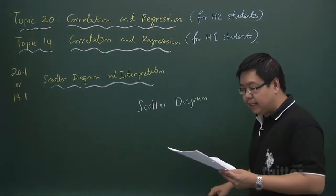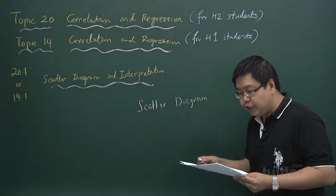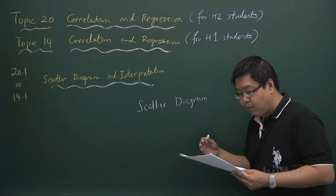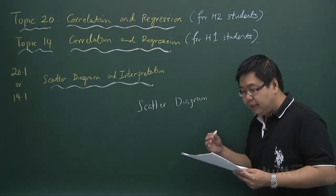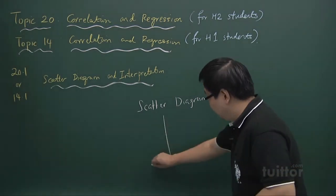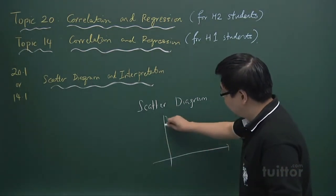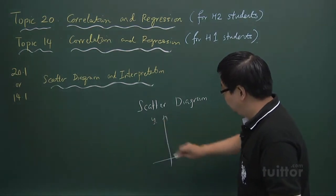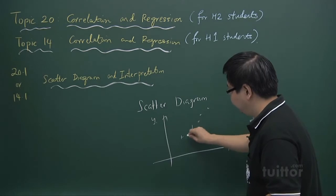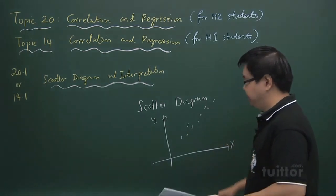A scatter diagram is obtained when each of the observed bivariate data, that means xi, yi, where i equals 1 to n, is plotted on the Cartesian plane. So that means you are actually having something like yi and x and some kind of points being plotted in this manner.